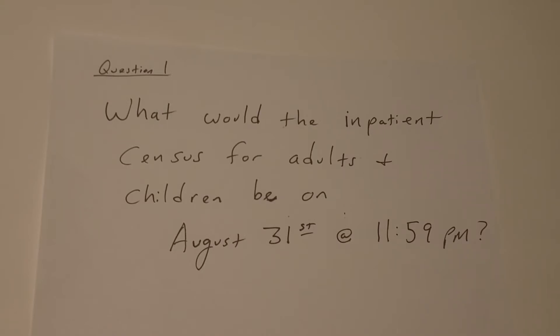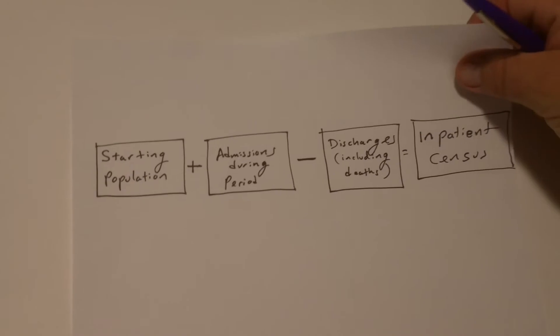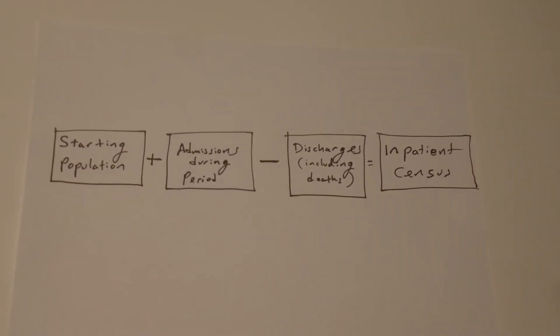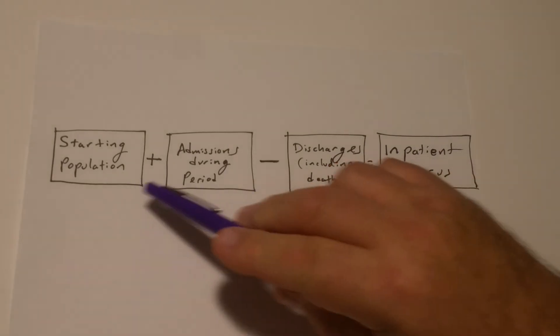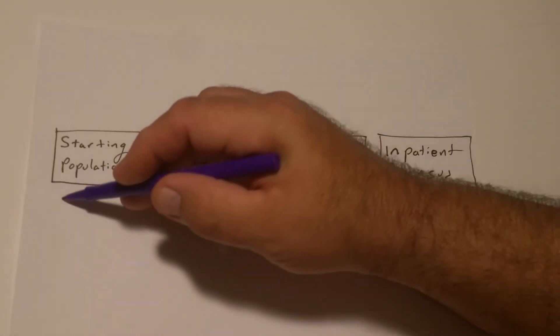So that is what we're trying to calculate. So, let's take a look at how we do this. Here's the steps you want to take. You're going to take your starting population, and you're going to add to it your admissions during the period.